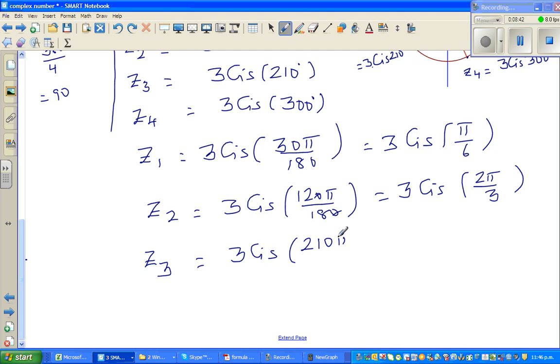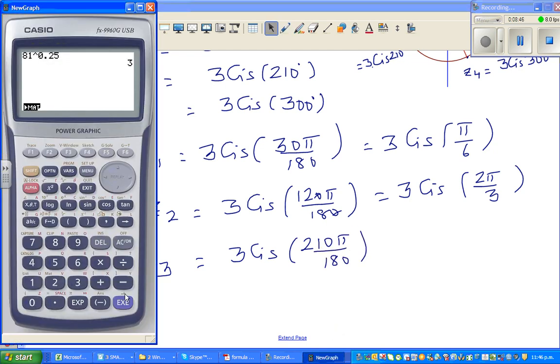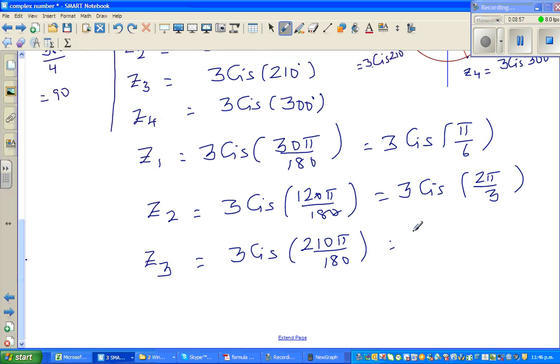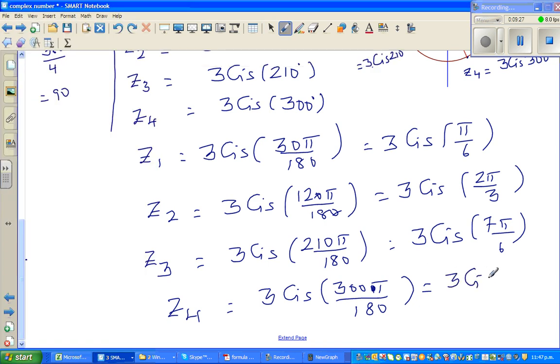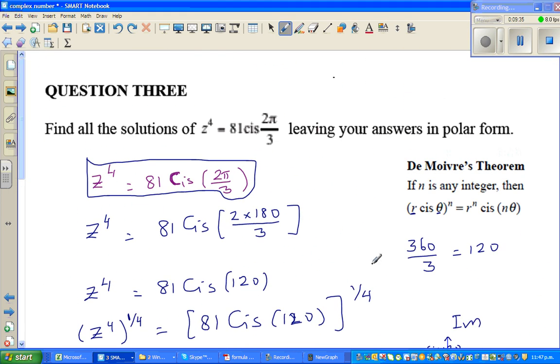Z3 is 3 cis 210 pi over 180. I'll use the calculator: 210 divided by 180, which is 7 pi by 6. And z4 is 3 cis 300 pi over 180, which is 300 divided by 180, that's 5 pi by 3. So these are the four roots in radians. See you in the next video.